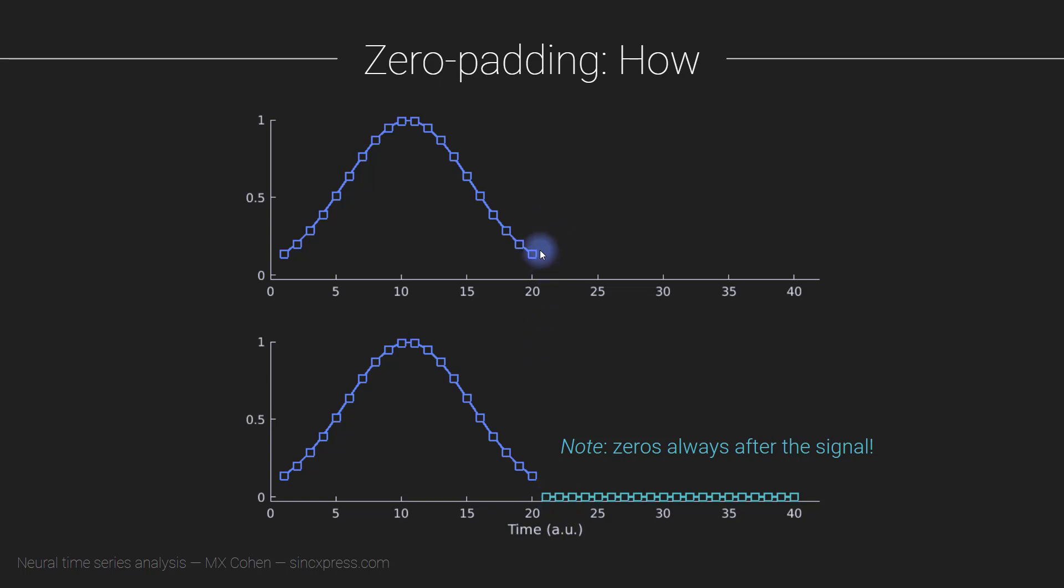Here we have no idea what happens after time point 20. From time point 21 to time point 40, we have literally no clue whatsoever what is going on with this signal because we didn't measure it. Here what we are doing is assuming that the signal has zeros out here, so in some sense we are actually adding information that there is nothing happening here. Nonetheless, this is the mechanism of zero padding to increase frequency resolution.